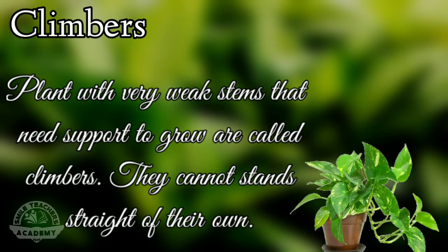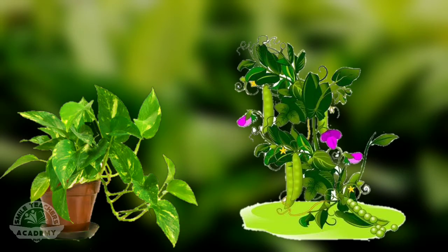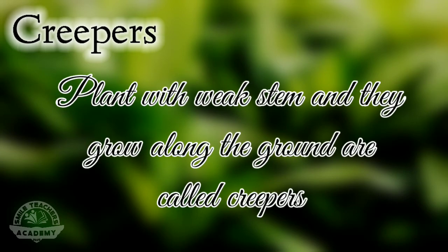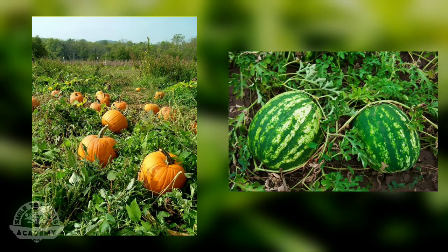Climbers — plants with very weak stems that need support to grow are called climbers. They cannot stand straight on their own. Example: money plant, pea plant. Creepers — plants with weak stems that grow along the ground are called creepers. Example: pumpkin, watermelon.